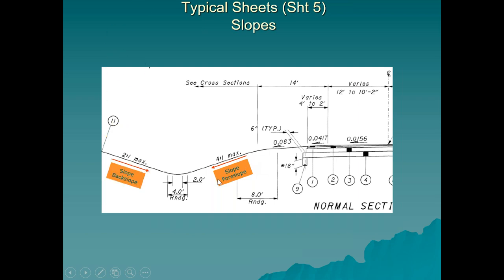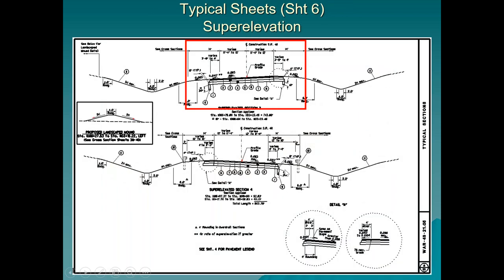To the left of the typical section is the ditch section. Coming off the pavement, there is a fore slope going into the ditch at a 4-to-1 ratio — for every 4 feet horizontally, we drop down 1 foot vertically. On the other side of the ditch is the back slope at a 2-to-1 ratio — for every 2 feet horizontally, we drop 1 foot vertically. At the bottom there is a 4-foot rounding with a 2-foot ditch bottom.